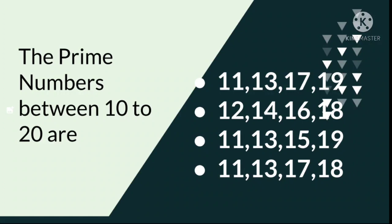Question number 14: The prime numbers between 10 to 20 are. The options are 11, 13, 17, 19; 12, 14, 16, 18; 11, 13, 15, 19; or 11, 13, 17, 18.